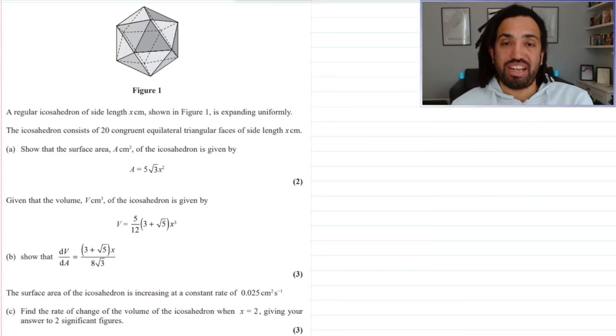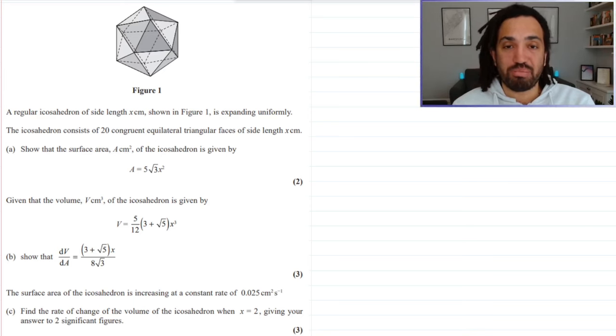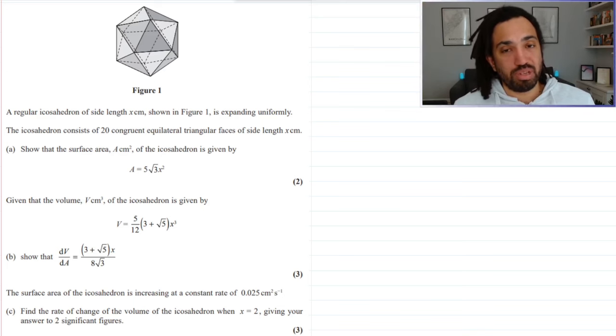Hello, my name is Mr. Asprey and today I've got another tricky question. This one is on rates of change and I've done this question because I have not put this topic in my predicted paper 2. The reason why is because we already had two differential equations on paper 1, so I thought it was probably unlikely that we'd have another question similar in paper 2.